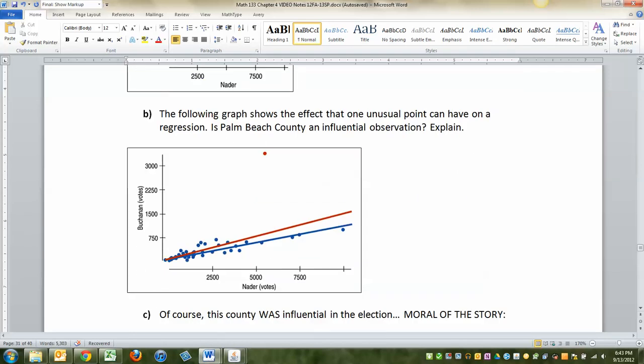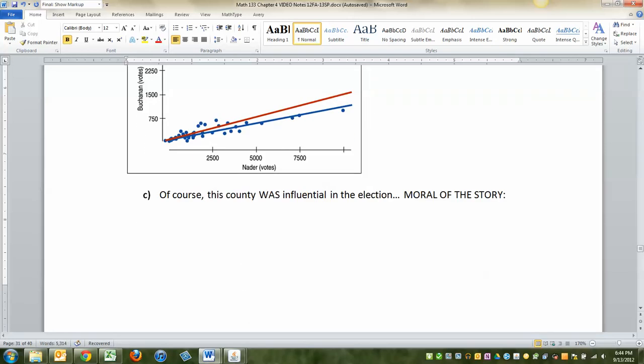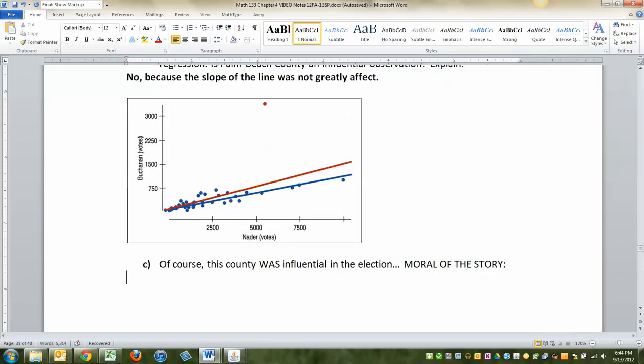All right. So the following graph shows that same point. And then we have the red line that includes that point and the blue line that does not include that point. So was Palm Beach an influential observation? The answer is no, because the slope of the line was not greatly affected. Slope and or the Y intercept, but the Y intercept isn't different either. All right. Of course, this county was influential in real life, right? I mean, we wouldn't have had George W. Bush as our president without this county. I mean, this county really changed everything for everybody.